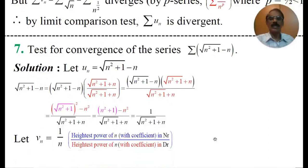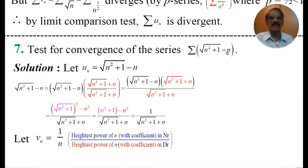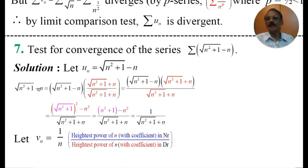Test for the convergence of the series Σ(√(n²+1) − n). Whenever we have a radical symbol, we apply rationalization — multiply and divide by the rationalizing factor of the nth term. Let un equal √(n²+1) − n. Since we have a minus sign, the rationalizing factor will be √(n²+1) + n.